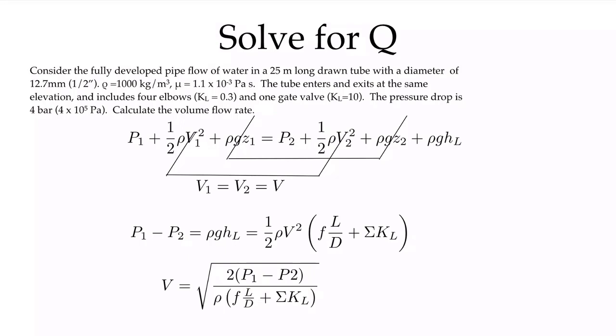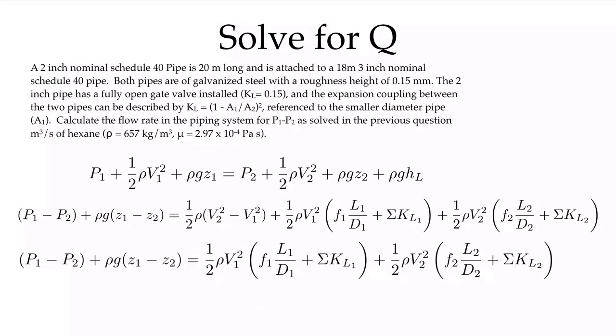Now the next thing we should do is ask the same question again, but now let's calculate the flow rate. We've got exactly the same parameters here except we're asking to calculate the flow rate in the piping system for P1 minus P2 as solved in the previous question. We'll take exactly the same system and the pressure drop we just calculated.